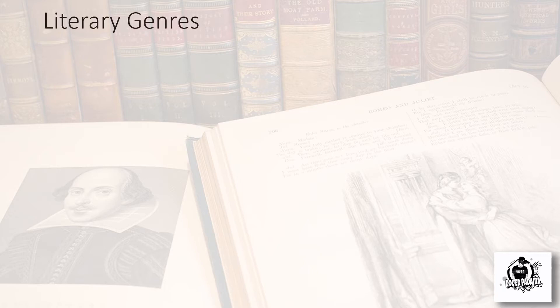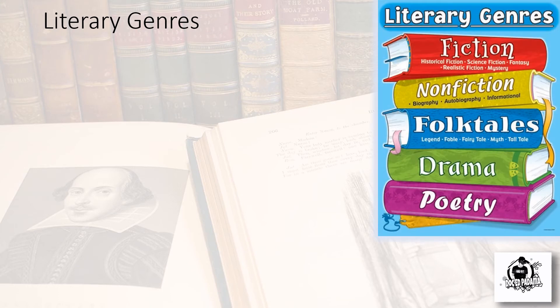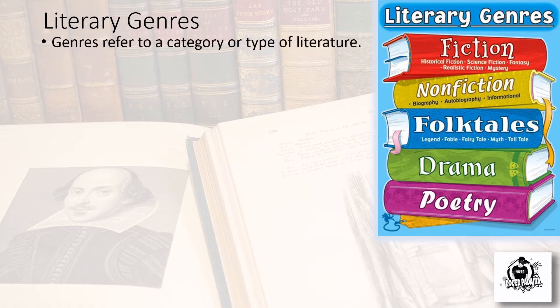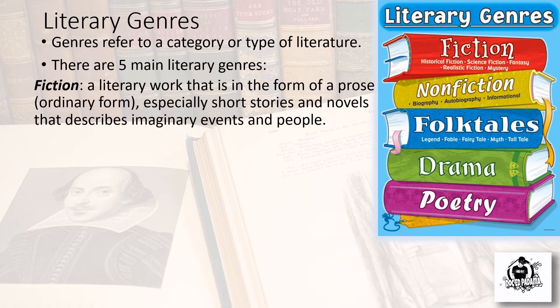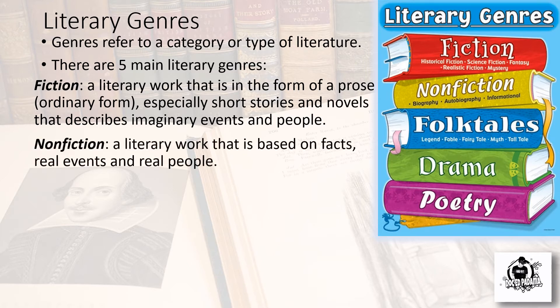The next topic is literary genre. Genre refers to types or classifications, and there are five types: fiction, non-fiction, folktales, drama, and poetry. Fiction is a literary work in the form of prose — especially short stories and novels — that describes imaginary or fictitious events and people. Non-fiction is the opposite: a literary work based on facts, truth, real events, and real people.